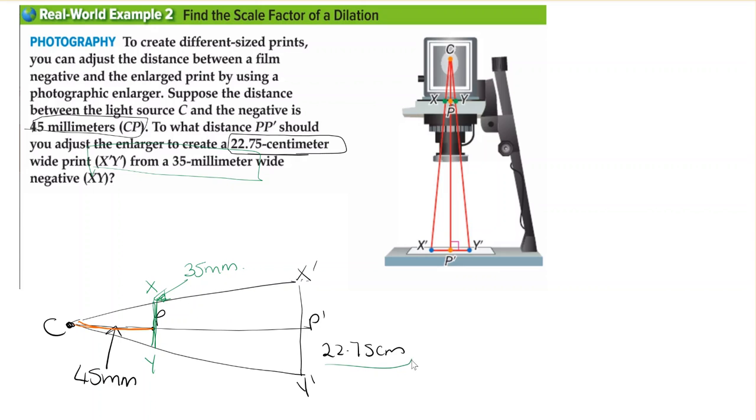This unit is in centimeters, so we need to change it to millimeters by multiplying by 10. That's 227.5 millimeters.